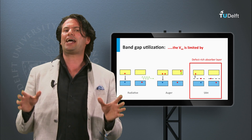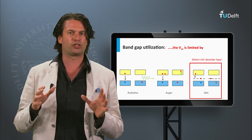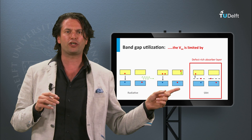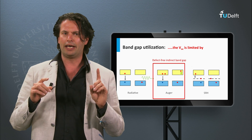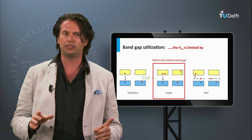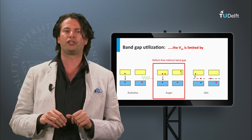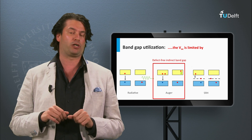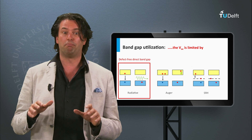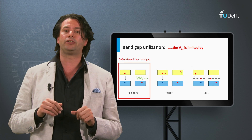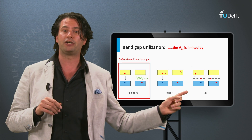If we now go back to the open-circuit voltage: in defect-rich solar cells, the open-circuit voltage is limited by Shockley-Reed-Hall recombination. In defect-free solar cells based on indirect bandgap materials, the open-circuit voltage is limited by Auger recombination. In defect-free solar cells based on direct bandgap materials, the open-circuit voltage is limited by radiative recombination.